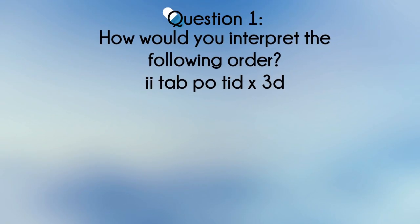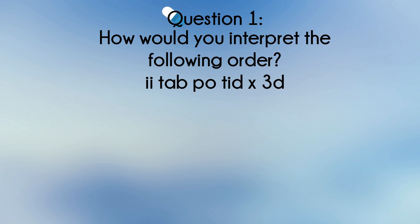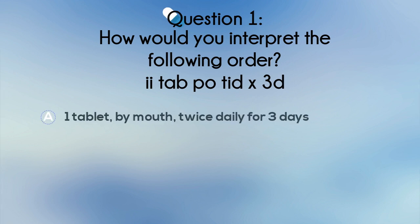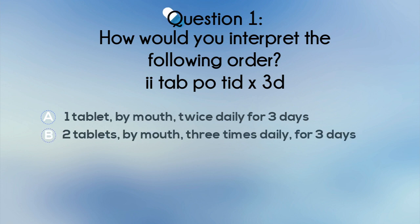Question 1. How would you interpret the following order? A. One tablet, by mouth, twice daily for three days. B. Two tablets, by mouth, three times daily for three days.